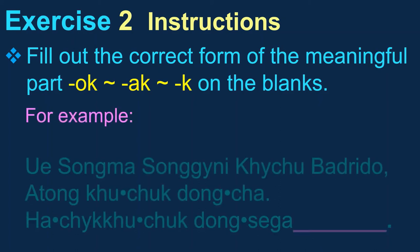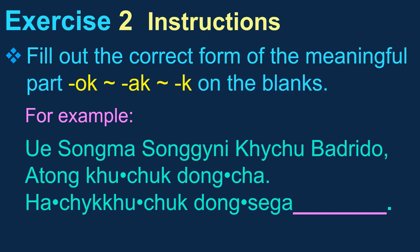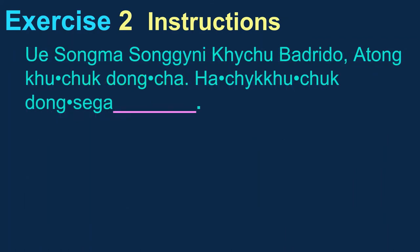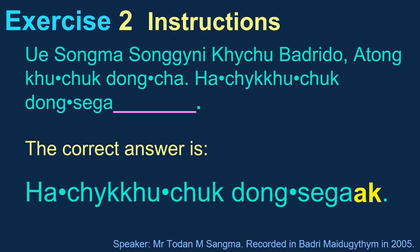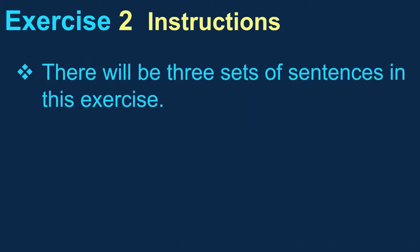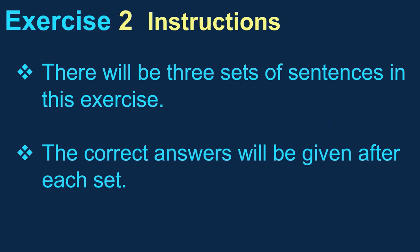For example, you see a sentence like this and you see a pink blank line. Read the sentences and fill out the correct form of the meaningful part, change of state — so Ok, Ak, or Ke, whatever is appropriate — on the blank line. There will be three sets of sentences in this exercise. The correct answers will be given after each set.